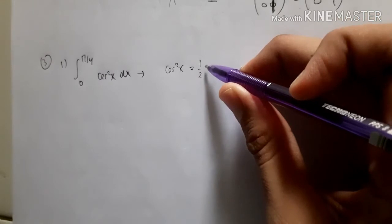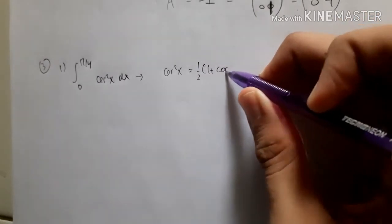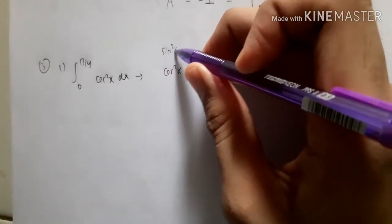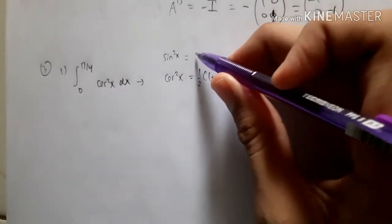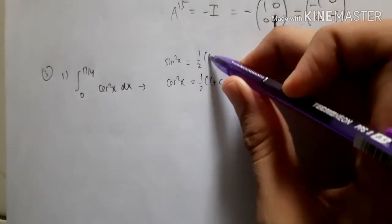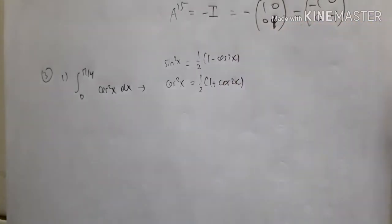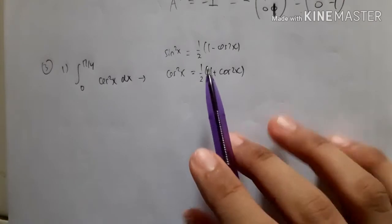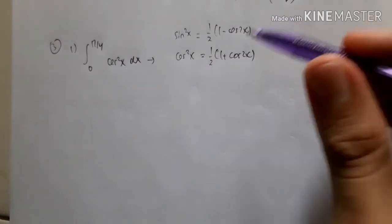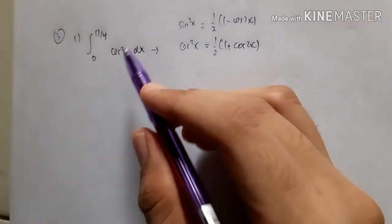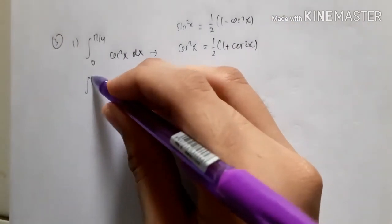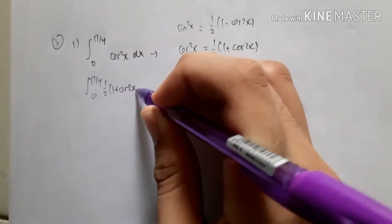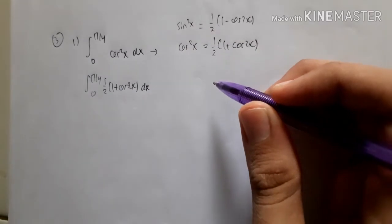To calculate this, we can change cosine squared x to half times (1 + cos 2x). If the question were sine squared x, we would change it to half times (1 − cos 2x). This makes the trigonometric integral much easier to calculate. So we change it to half times (1 + cos 2x) dx.